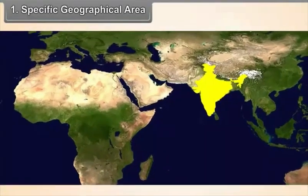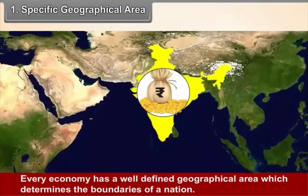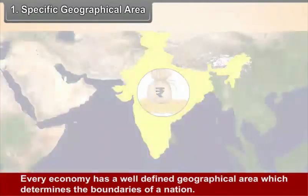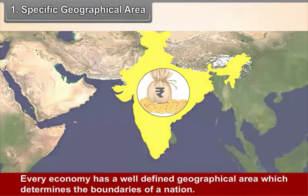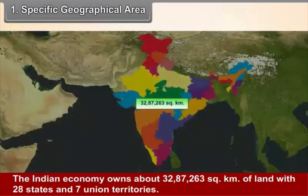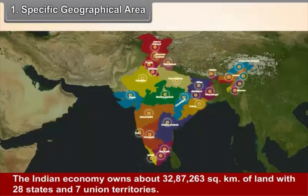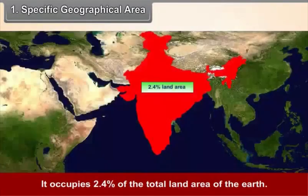1. Specific Geographical Area. Every economy has a well-defined geographical area which determines the boundaries of a nation. The Indian economy owns about 32,87,263 km² of land with 28 states and 7 Union territories. It occupies 2.4% of the total land area of the earth.